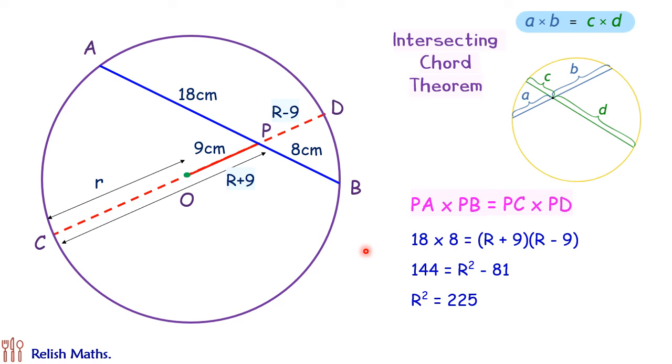R square is 225 and R, that's the radius of the circle, is 15 centimeter and that's our answer. I hope you enjoyed the solution.